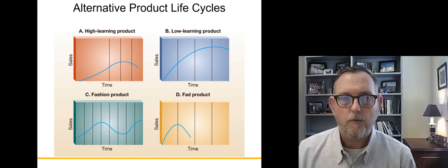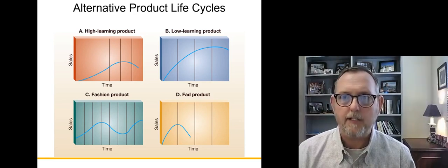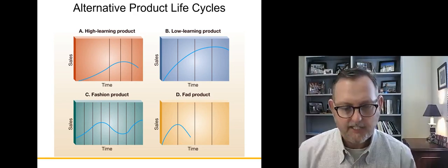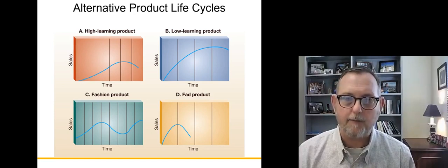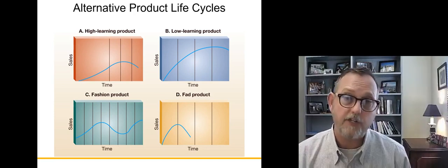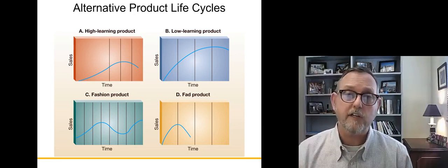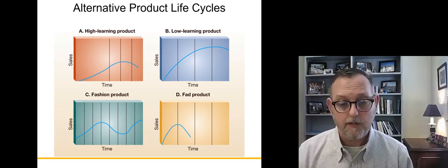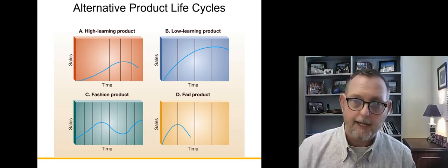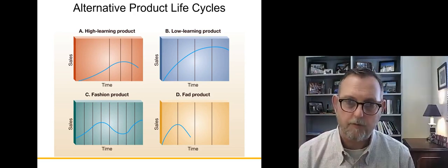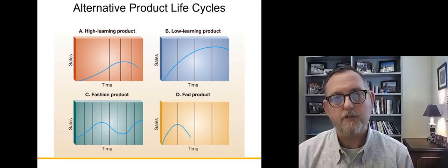In illustration D, you have really the opposite, where you've got a fad product, where the product takes off very rapidly and finishes up and declines very rapidly. Or even the B illustration, where there's a very short learning curve, people understand the product quickly. So they go through the product life cycle very quickly and up through the process.